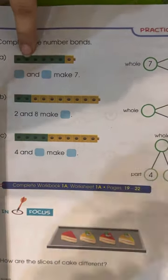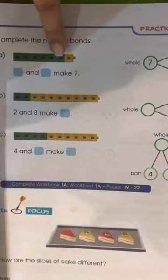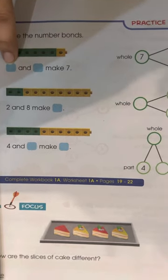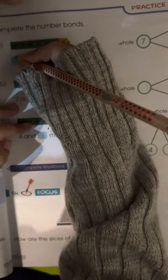Count. One, two, three, four, five, six. Write six here. Here, here. Six. Yes. Okay.